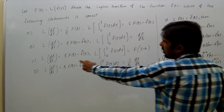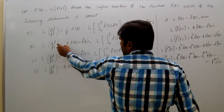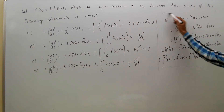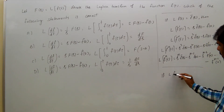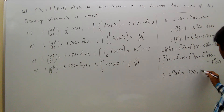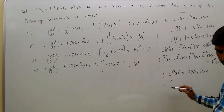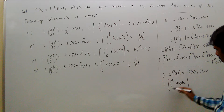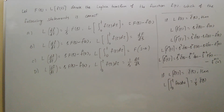Accordingly, looking at the derivative part, all three options have the same correct differentiation formula. Now coming to the integration formula: if Laplace transform of F(t) equals F-bar(S), then Laplace transform of the integral from 0 to t of F(u) du equals (1/S) times F-bar(S).